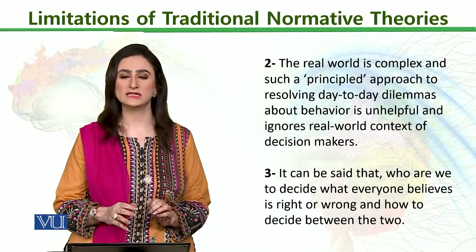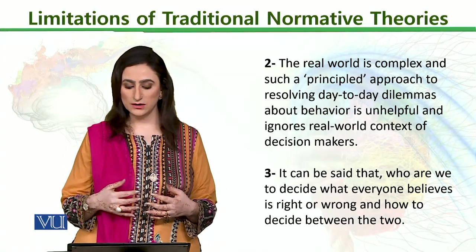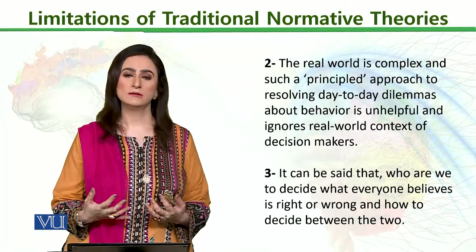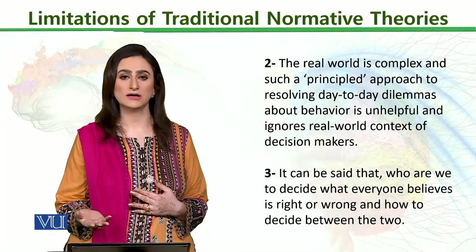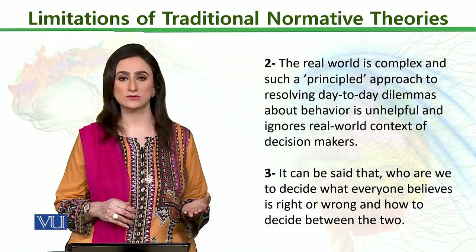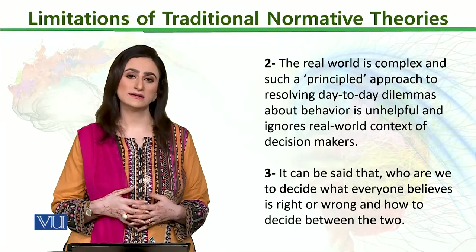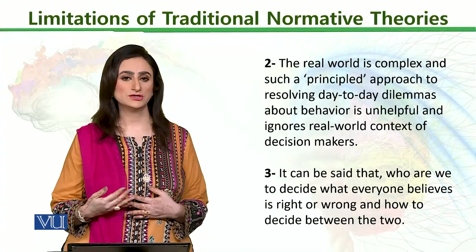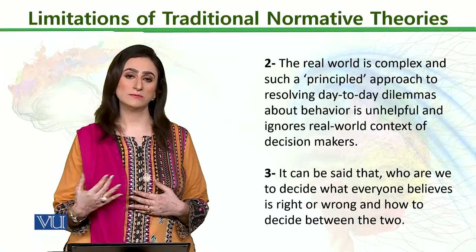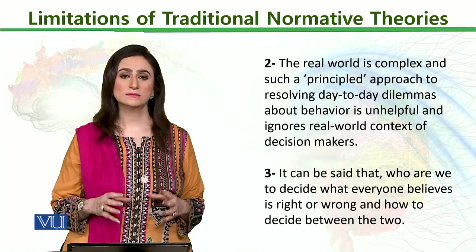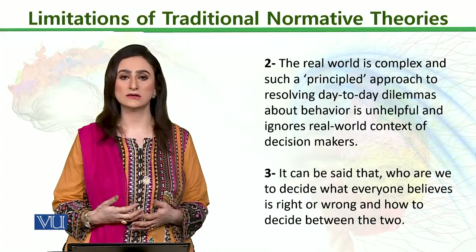We can't simply decide that a particular rule applies to everyone. It can be said that who are we to decide what everyone believes is right and wrong — we don't have any autonomy to judge this. If we look at this perspective, the right and wrong concept in society is important, but if we don't establish overall norms, then making right and wrong decisions will be very difficult.